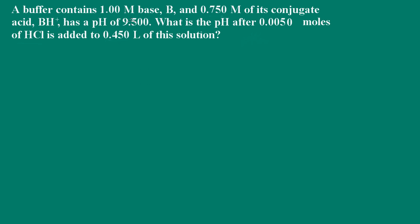In this problem, we're told that we have a buffer that contains one molar base and 0.75 molar of the conjugate acid. And this buffer solution has a pH of 9.5. We're asked what is the pH after 0.005 moles of hydrochloric acid is added to 0.45 liters of the solution.